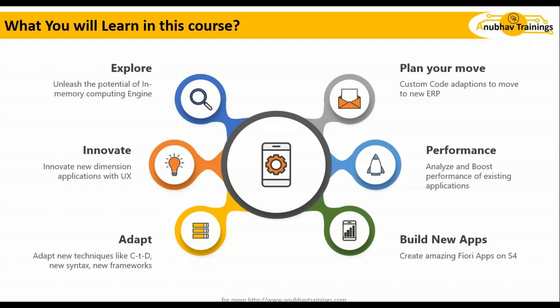In the third phase, we will discuss innovation — new dimension applications and new dimension techniques. How do you consume data right from the HANA box into the ABAP layer? For those from a BW background, this is very interesting because that's where you used to create data models and consume them in BEx reports. We will look at how to boost the performance of existing ERP applications. There are two challenges: first, moving custom code to S4, and second, optimizing that custom code so your company can take best leverage of the in-memory computing engine called HANA.